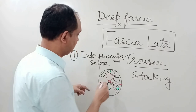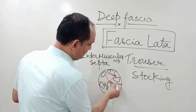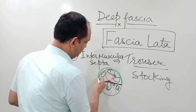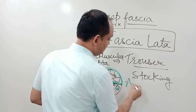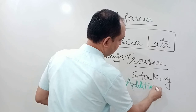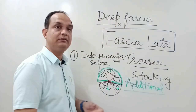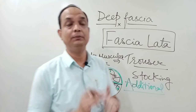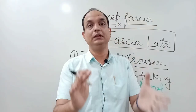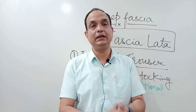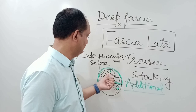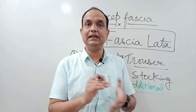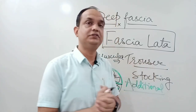Another important function is that the deep fascia, along with the septa, provides an additional surface for the origin of muscle fibers. So muscle fibers originate not only from the bone but also from the septa and from the deep fascia — that is the fascia lata. This is why the lower limb muscles are bulky.